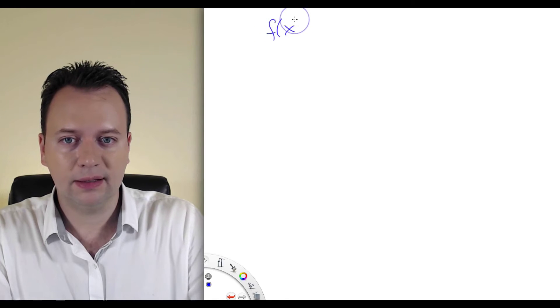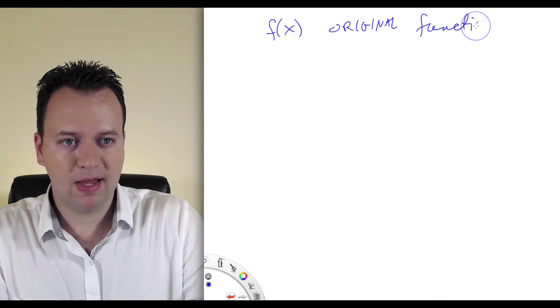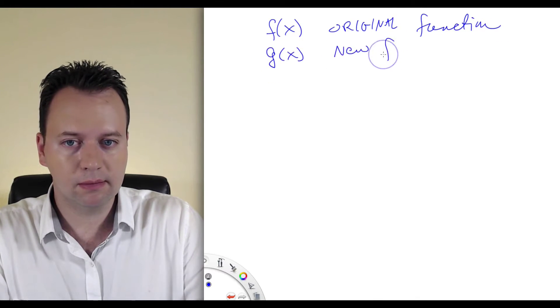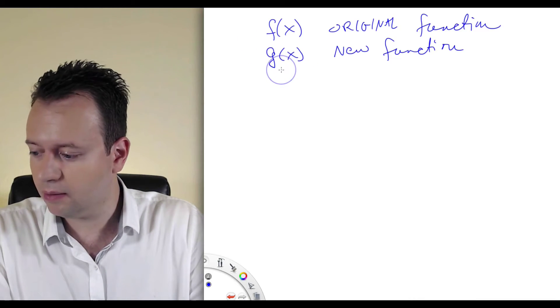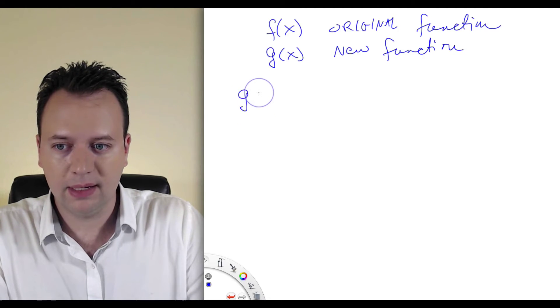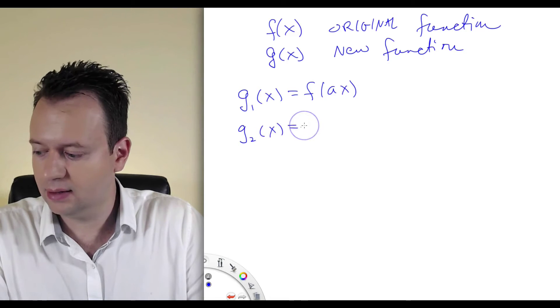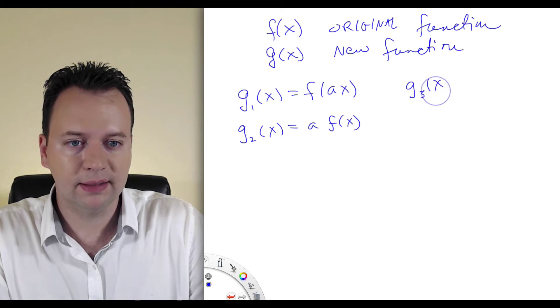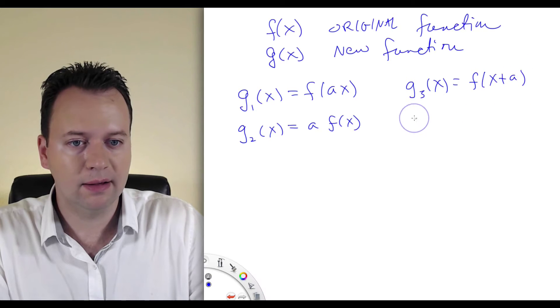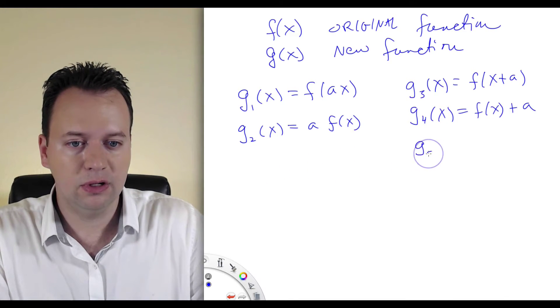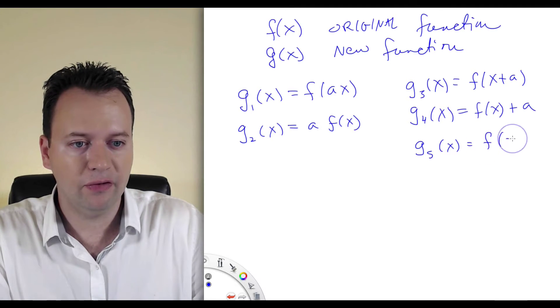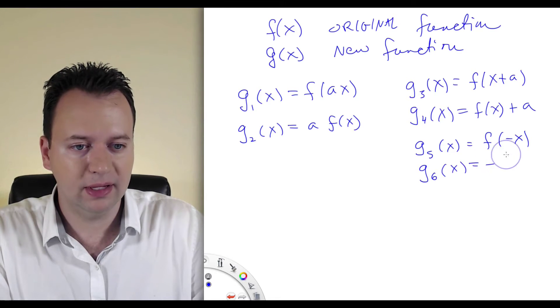So how do we represent these transformations mathematically in functional notation? If f of x is the original function and g of x is the new function, here are the cases: g1(x) = f(ax), g2(x) = a·f(x), g3(x) = f(x+a), g4(x) = f(x) + a, g5(x) = f(−x), and g6(x) = −f(x). This is the arsenal of changes we'll consider.